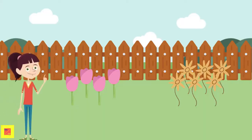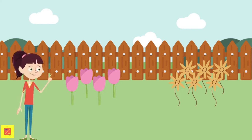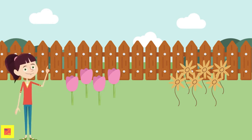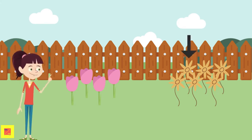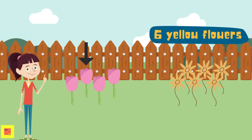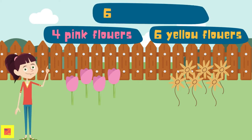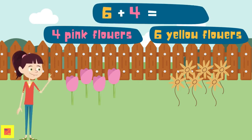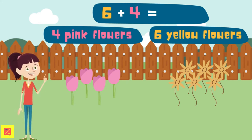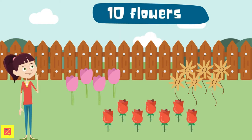Alrighty, let's head outside again. Let's help Irene count the number of flowers planted in their backyard. We can simply add: 1, 2, 3, 4, 5, 6 yellow flowers, so 1, 2, 3, 4 pink flowers. Six plus four is equal to — that's right — ten flowers.